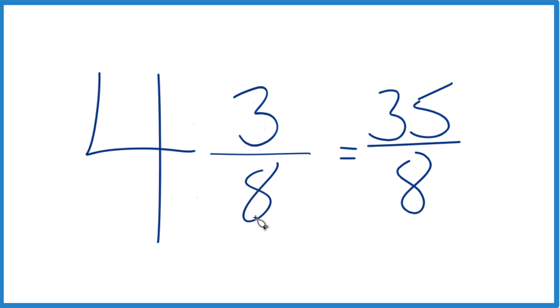4 times 8, 32. 32 plus 3, that gives us our numerator, 35.